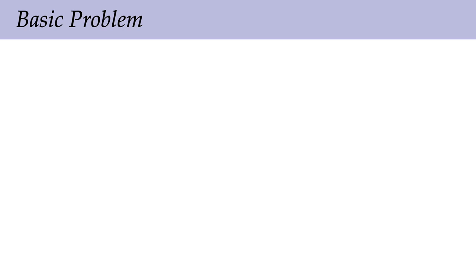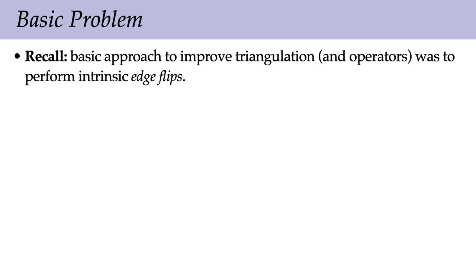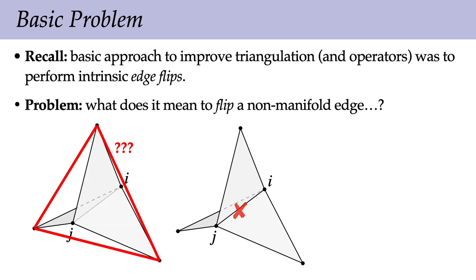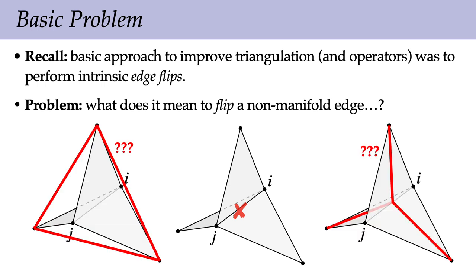So how do we actually build a good discrete Laplacian for this kind of object? Remember that our basic tool for improving triangulations was to perform intrinsic edge flips. So we have a little bit of a conundrum: what could it possibly mean to flip a non-manifold edge? If you try to think about this either extrinsically or intrinsically, it doesn't immediately make a whole lot of sense. So we're actually going to sidestep this question and do something different.